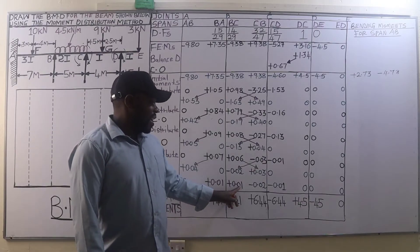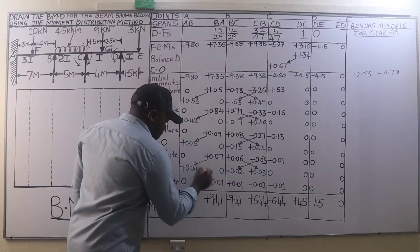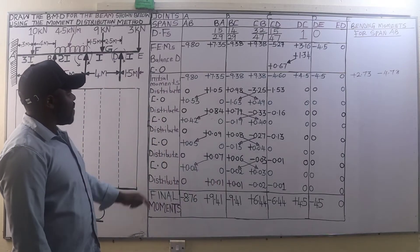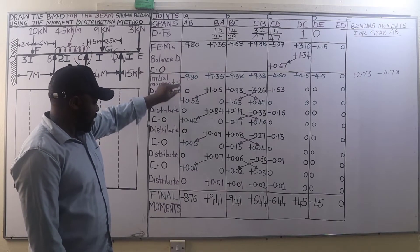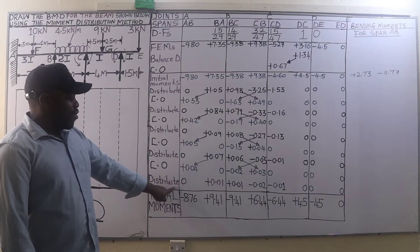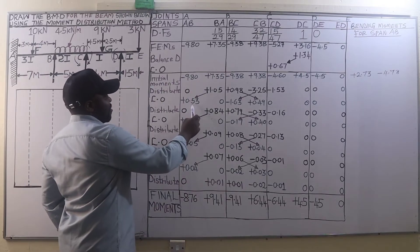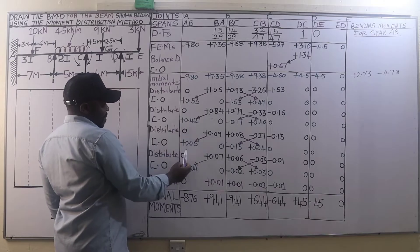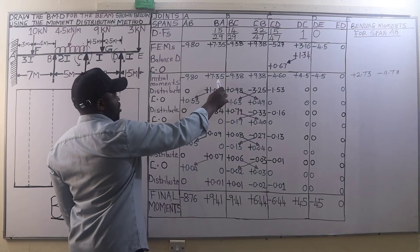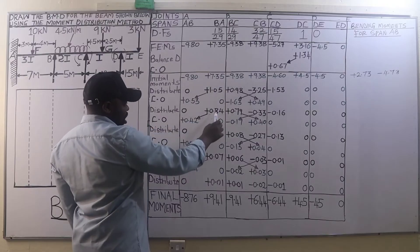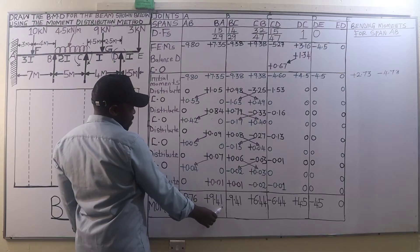After arriving at the required degree of precision we cannot continue. The final moments are given by adding all the moments from the initial moments all the way to the final distribution. For member AB: minus 9.80 plus 0.53 plus 0.42 plus 0.05 plus 0.04 gives minus 8.76. For member BA we add all those moments to get positive 9.41.